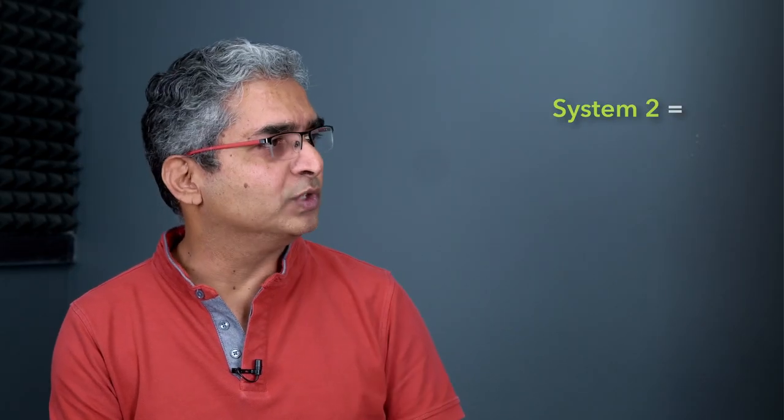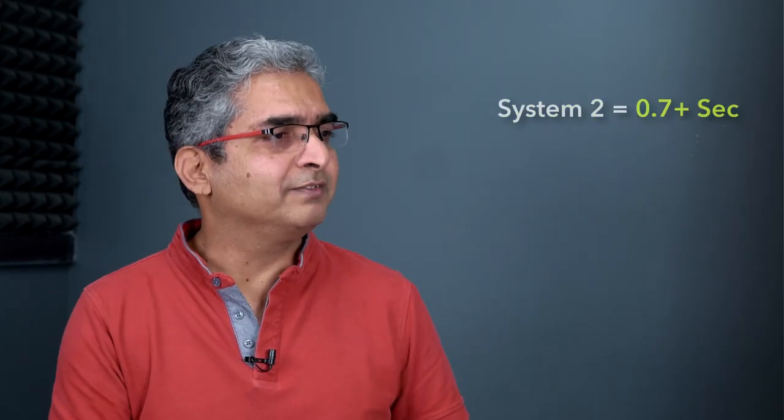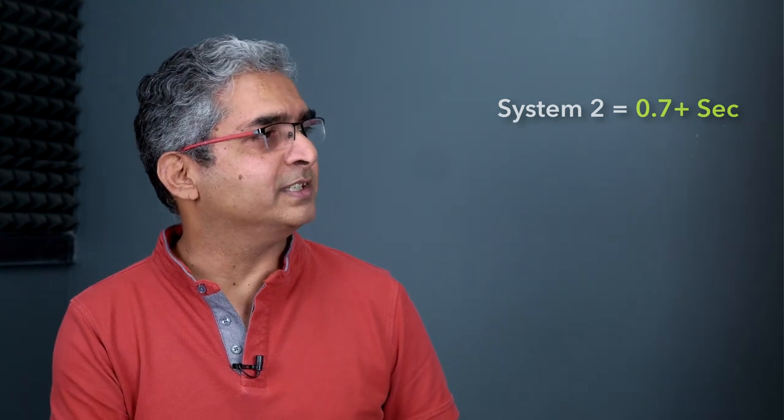Whereas, system two, the thinking brain, does not even get started for 0.7 seconds. Which means that any situation you are in, immediately system one first takes a look at it, right? System one decides. Then system one will usually just react in most situations. Once in a while, system one will say, you know what? This is not my thing.